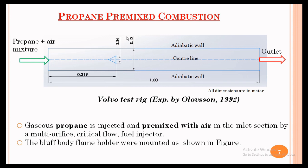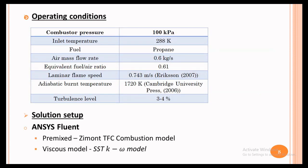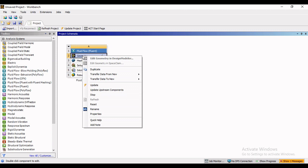We are considering the dimensions as well as boundary conditions exactly similar to those taken by Olversen. Because it is a premixed combustion, we are also including a flame holder — a triangle flame holder in this particular case. The geometry has almost 1 meter of length, a passage of 0.12 meter, and the triangle bluff body is 0.04 meter on each side, situated at 0.0319 meter from the inlet. In ANSYS Fluent, we are going to use the Zimont combustion model.